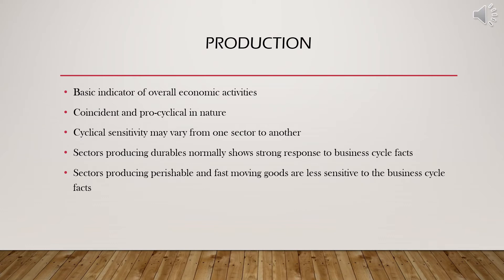Production is called the basic indicator of overall economic activities because an increase in production determines many things — GDP, national income, and employment. It is a very important variable when considering business cycle facts. Production is normally coincident and procyclical in nature. Whenever the economy is expanding, the overall production of the country will also expand, and it moves at the same pace as the business cycle.